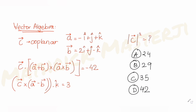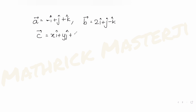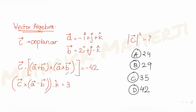Vector a is minus i-cap plus j-cap plus k-cap, and vector b is 2i-cap plus j-cap minus k-cap. Let's say vector c has coefficients x, y, and z for i, j, k. Using the first condition — the dot product of c with (a+b) cross (a×b) — let's first find a+b and a×b.